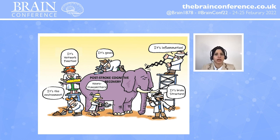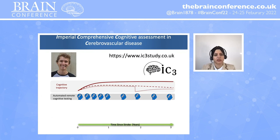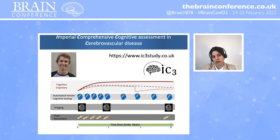I've only touched on how networks can predict recovery — there are lots of other ways to look at recovery. For this, we would need large multicenter trials. The US is running the DISCOVERY trial, and there is the ReST4VAD — large trials that hopefully will answer some of these questions. At Imperial, we're running the IC3 study we've just started. Please go and visit Dragos's poster on this. We're collecting longitudinal cognitive monitoring remotely with brain imaging and blood biomarkers of amyloid pathology and neuroaxonal injury. Hopefully collectively, we will be able to find answers to some of these questions.